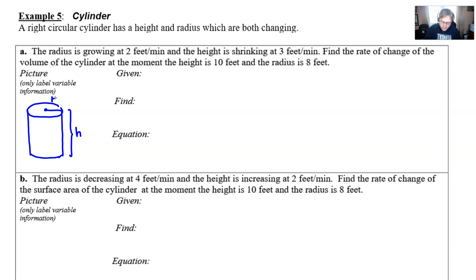If I want to use arrows, the radius is growing so I can put a positive or right direction arrow above the radius, and if the height is shrinking I might put a little downward arrow to indicate that. That's really about all I can draw with this picture. Maybe the picture isn't going to be super helpful.